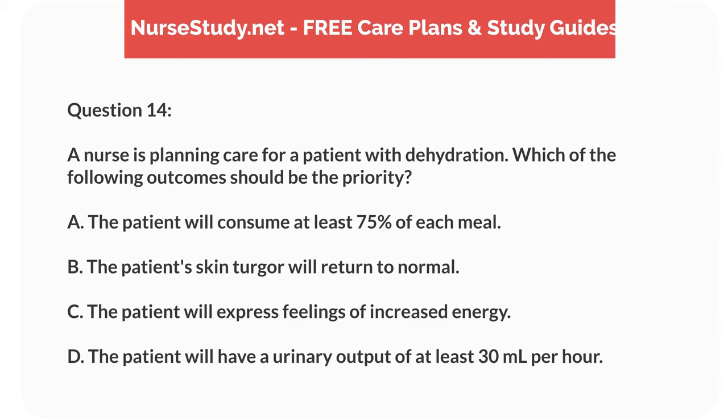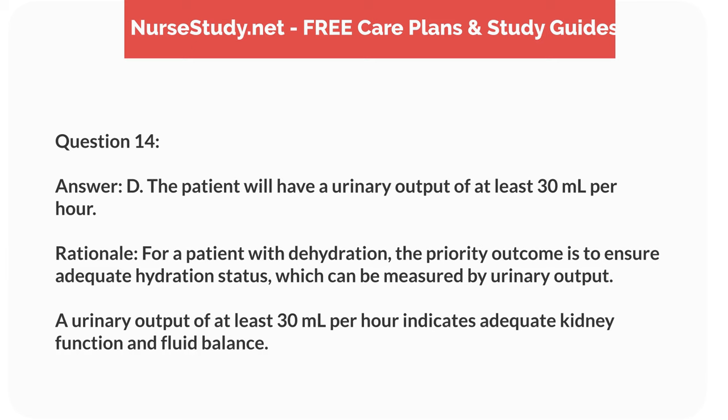Question 14. A nurse is planning care for a patient with dehydration. Which of the following outcomes should be the priority? A. The patient will consume at least 75% of each meal. B. The patient's skin turgor will return to normal. C. The patient will express feelings of increased energy. D. The patient will have a urinary output of at least 30 mL per hour. Answer: D. The patient will have a urinary output of at least 30 mL per hour. Rationale: For a patient with dehydration, the priority outcome is to ensure adequate hydration status, which can be measured by urinary output. A urinary output of at least 30 mL per hour indicates adequate kidney function and fluid balance.